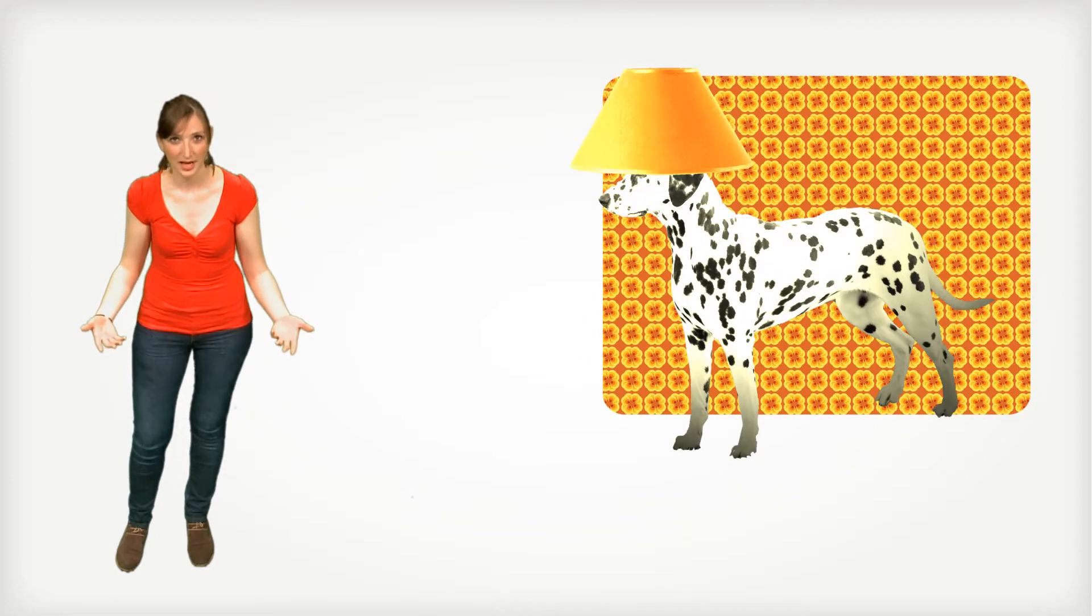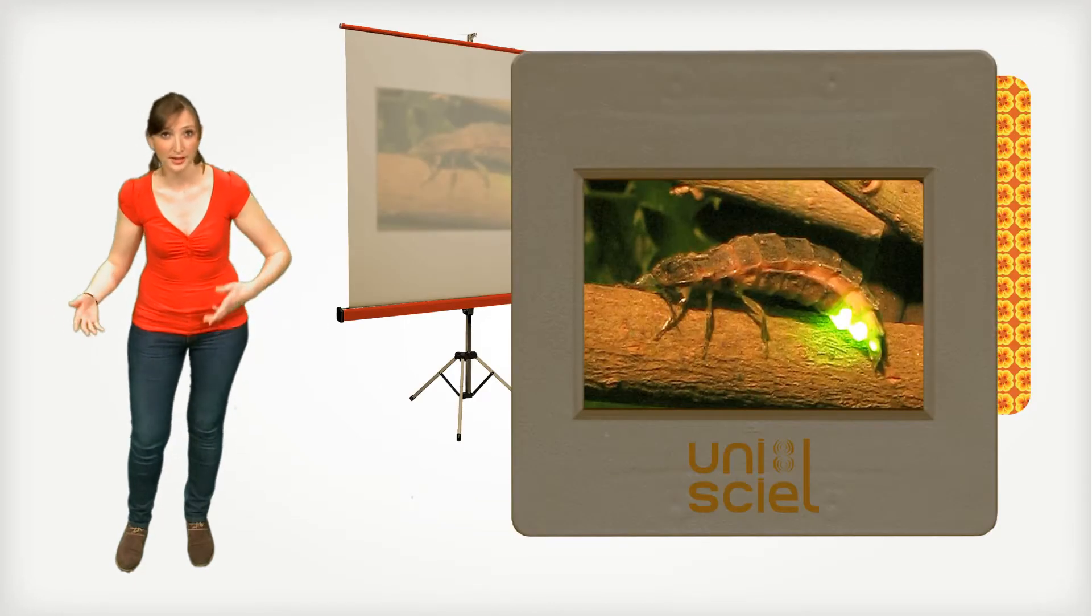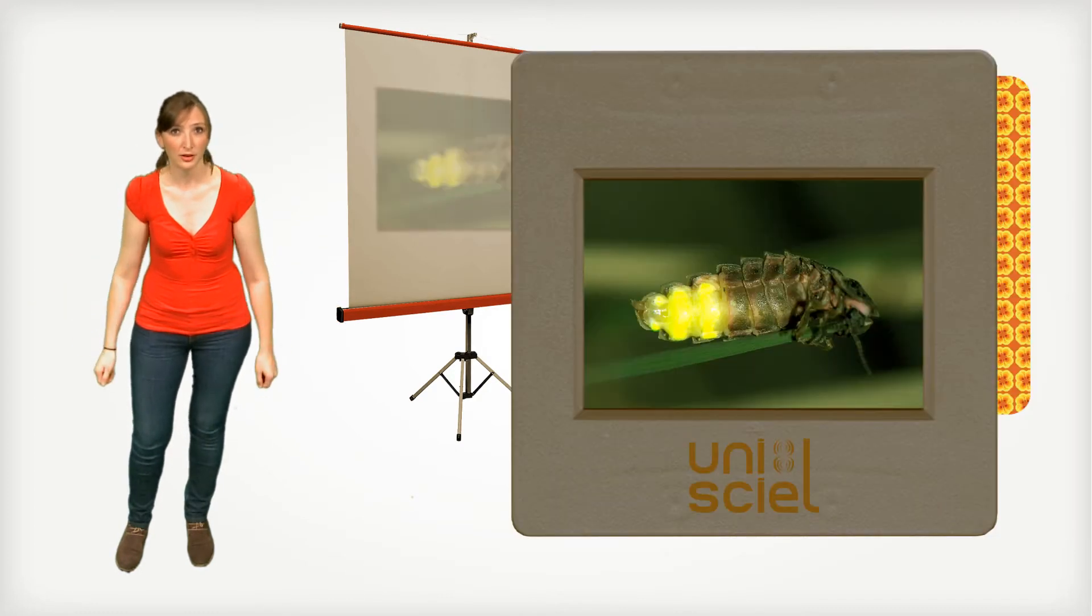In order to get light with an animal, you need an animal that produces light. We know fireflies and glowworms, but they are not the only ones.